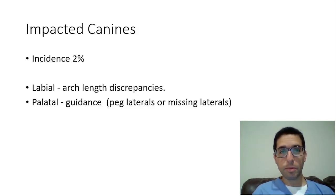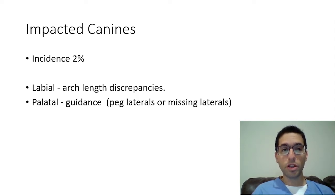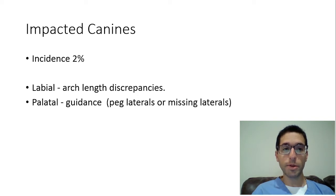Impacted canines are the second most common tooth to be impacted, with a roughly 2% incidence, so fairly common. The most important part is trying to figure out if they're on the labial or the buccal or facial aspect as opposed to the palatal aspect, because if you're going to expose and bond it, you've got to know which side to approach it from.